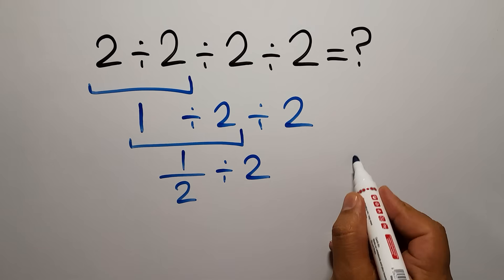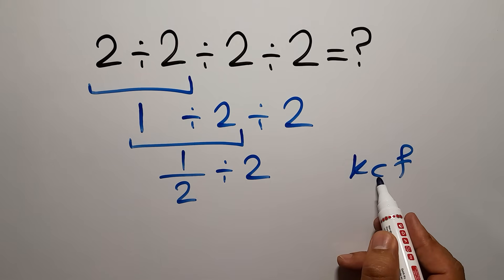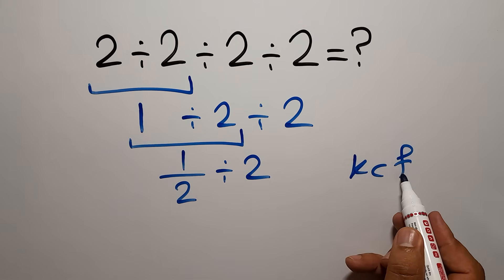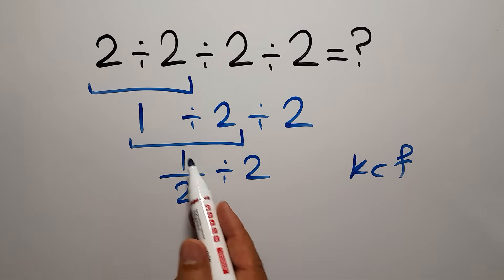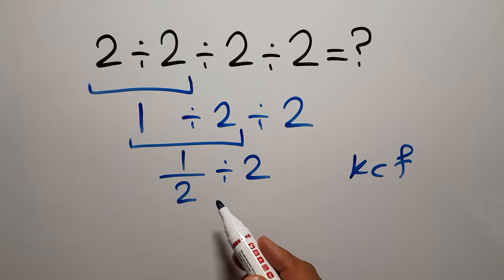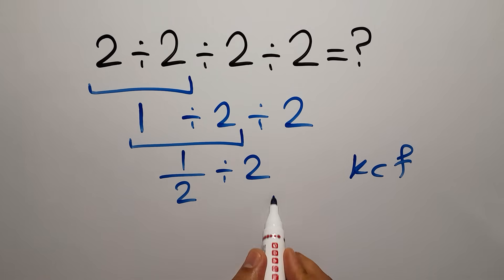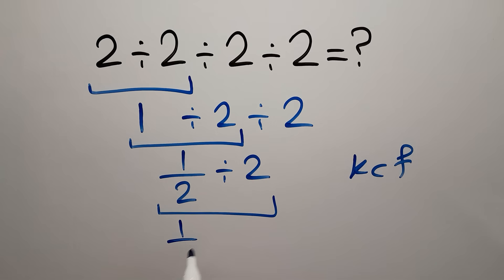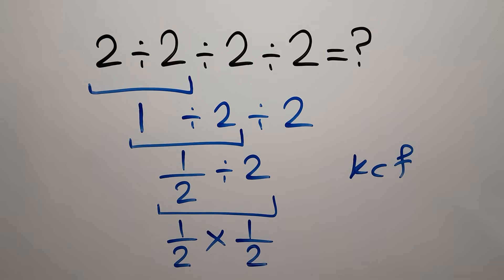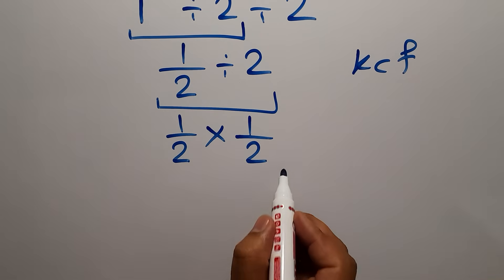According to the KCF rule — K stands for Keep, C stands for Change, and F stands for Flip — we keep the first fraction, change the division to multiplication, and flip the second fraction. So we can write 1 over 2 times 1 over 2.